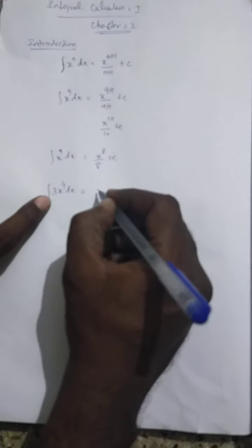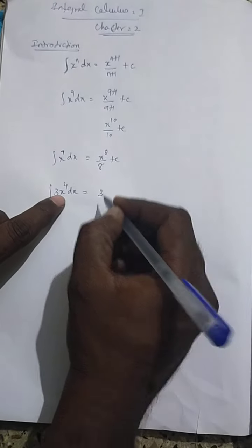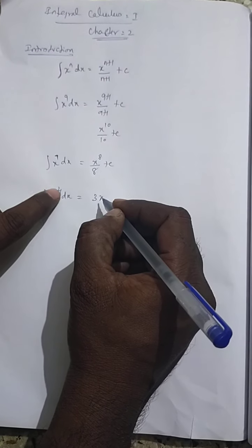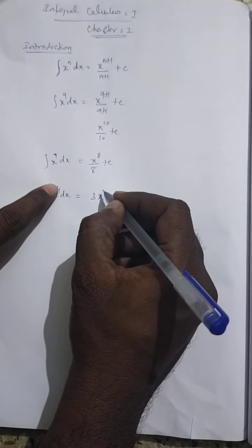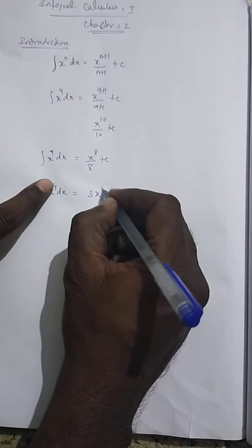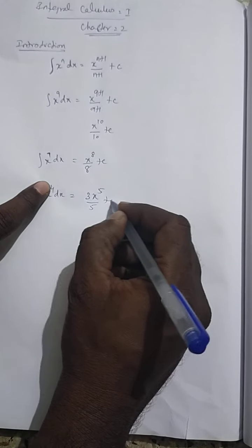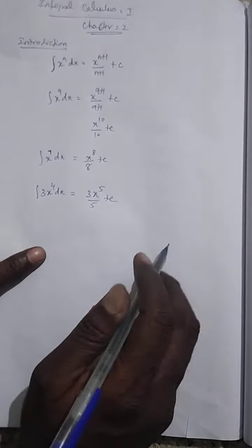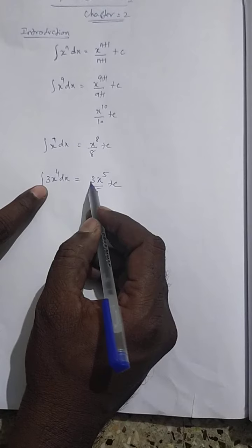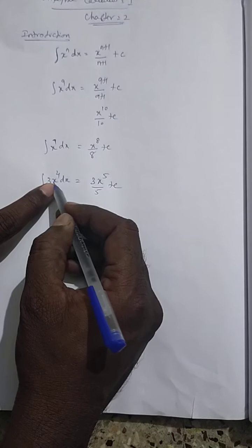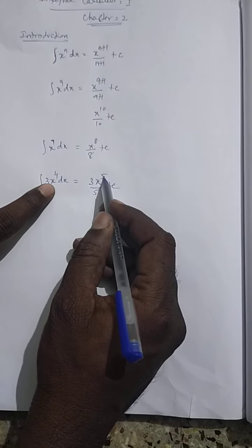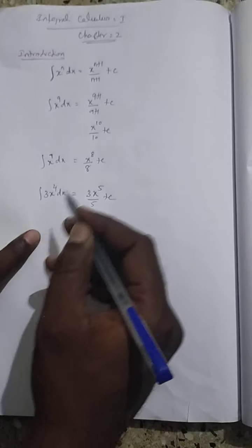Now, the integration of 3x power 4 dx. Here, some constant is there. 3 is a constant, so you keep the 3 outside. Then apply the formula to x power 4: x power 4 plus 1, that is x power 5 by 5 plus c. So the answer is 3 times x power 5 by 5 plus c.